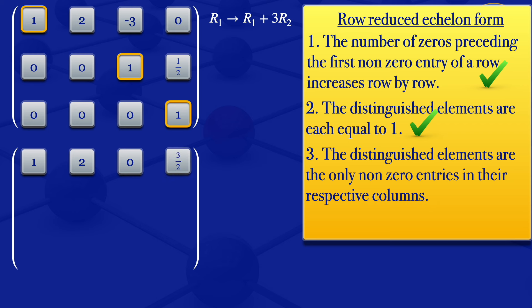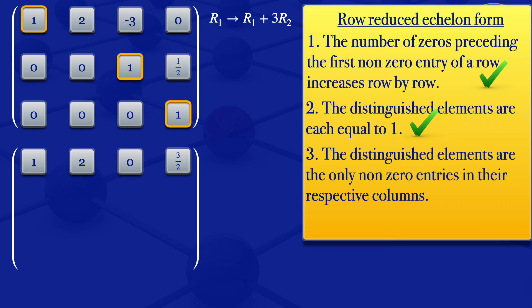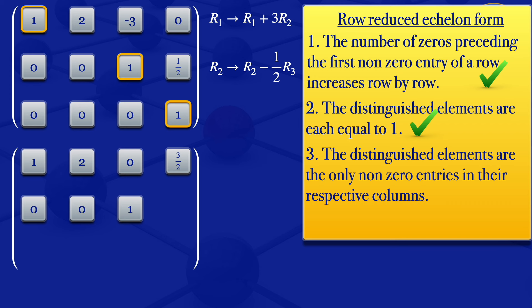So that's the new row one there. But we are also having that for the distinguished element in column four, we need all other elements to be zero. So we need this one over two to be a zero. For us to get a zero when we have a one over two, we can use this one. So we multiply row three by a half, then subtract that from row two. We transform row two to row two minus a half times row three: zero minus zero gives zero; zero minus zero gives zero; one minus zero; then a half minus a half times one gives a half minus a half, which gives zero.